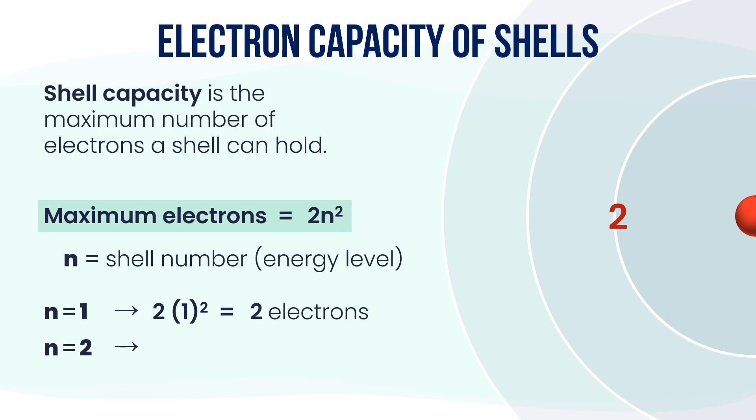Second shell, N equals 2: 2 multiplied by 2 squared equals 8 electrons. For the third shell, N equals 3: 2 multiplied by 3 squared equals 18 electrons. So as the shell number increases, its capacity to hold electrons also increases.